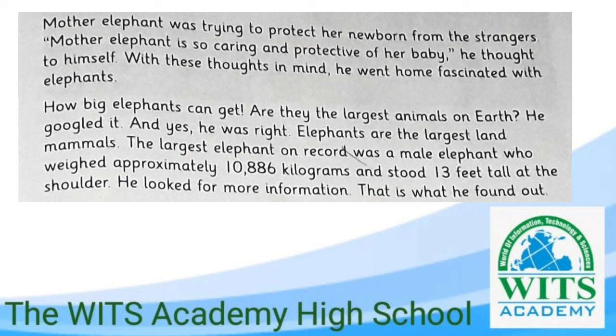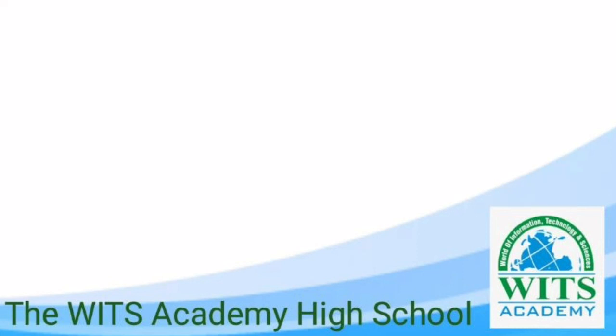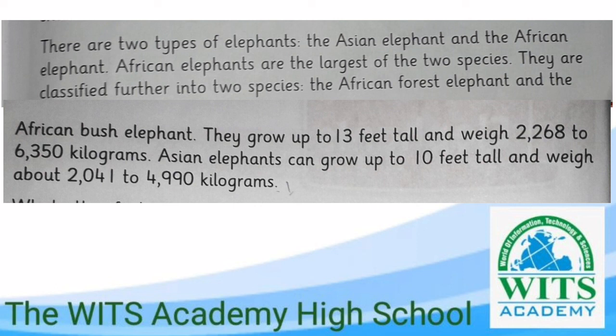He googled it and yes, he was right — elephants are the largest land mammals, weighing 10,886 kilograms and standing 13 feet tall. There are two types of elephants: the Asian elephant and the African elephant. African elephants are the largest of the two species and are classified further into two sub-species: the African forest elephant and the African bush elephant. They grow up to 13 feet tall and weigh 2,268 to 6,350 kilograms. Asian elephants can grow up to 10 feet tall and weigh about 2,401 to 4,990 kilograms.